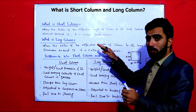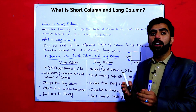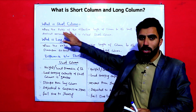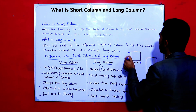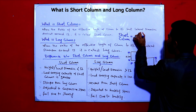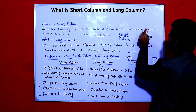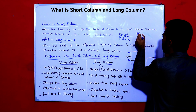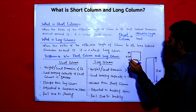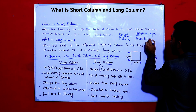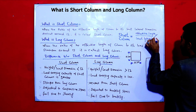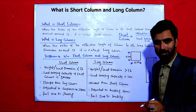In other words, if the effective length of the column divided by the least lateral dimension of the column gives a result less than 12, it is called a short column. So the formula is: effective length divided by least lateral dimension — when this ratio is less than 12, the column is a short column.